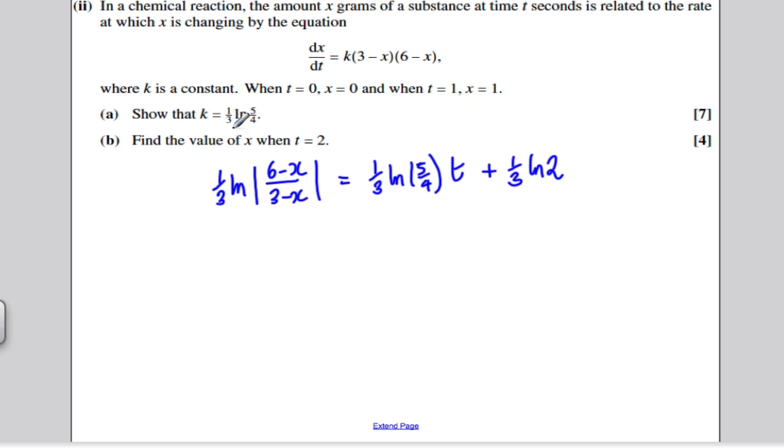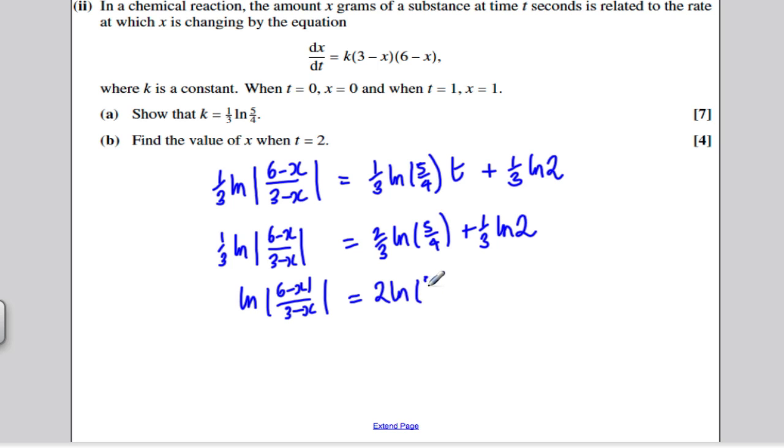So that's our particular solution. We want to find x when t is 2, so we substitute in t is 2. We get a third ln((6-x)/(3-x)) must be equal to. Well, this is 2, so I'm going to have 2 thirds ln(5/4) plus a third ln 2. Why don't I times everything by 3 to remove the thirds? And I get ln((6-x)/(3-x)) would be equal to 2 ln(5/4) plus ln 2.